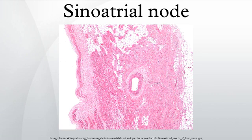SA node fibers are more tortuous and stain less intensely than cardiac myocytes. Innervation: The SA node is richly innervated by parasympathetic nervous system fibers and sympathetic nervous system fibers. This unique anatomical arrangement makes the SA node susceptible to distinctly paired and opposed autonomic influences.